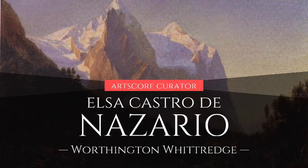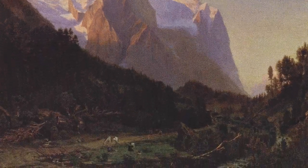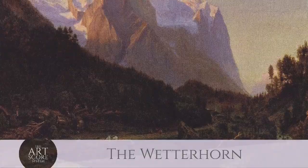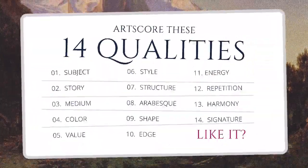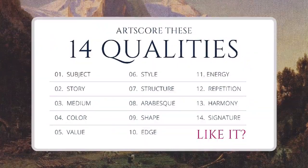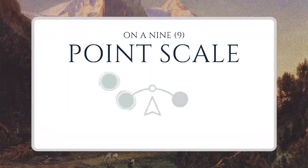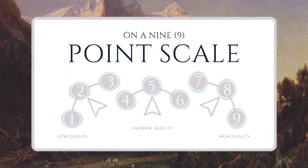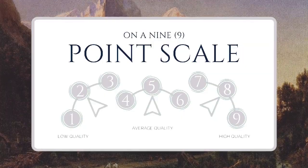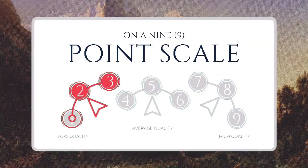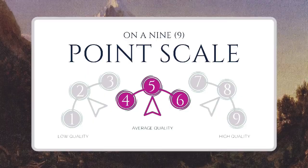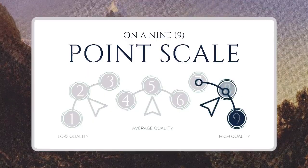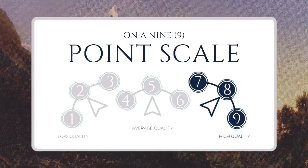Thank you to our sponsor for curating this video. Let's score art based on 14 qualities. Use our 9-point scale to score how clear and smart each quality is used. Score 1, 2, or 3 for low quality; 4, 5, or 6 for okay quality; and 7, 8, or 9 for high quality.